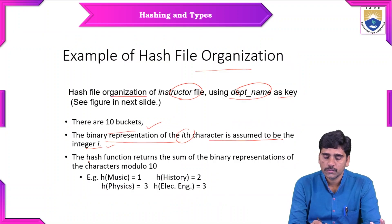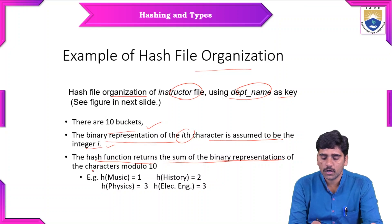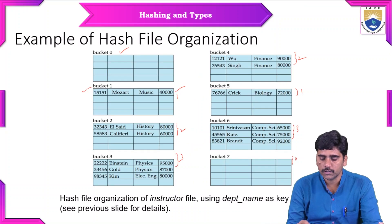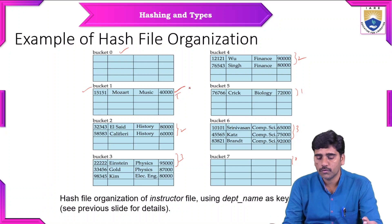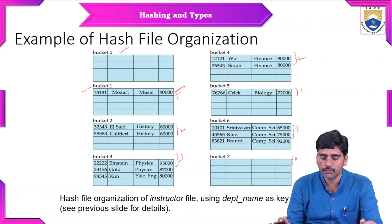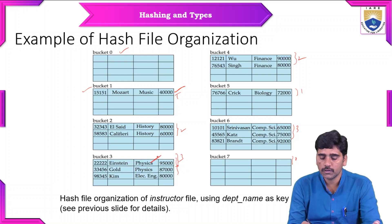The hash function returns the sum of the binary representation of the characters modulo 10. So hash of music equals 1, meaning the music value is contained in only one bucket — bucket 1. Hash of physics equals 3, meaning physics values are stored in bucket 3. Hash of history equals 2, so history is located at bucket 2. Electrical engineering is located at bucket 3.